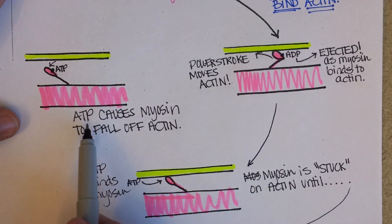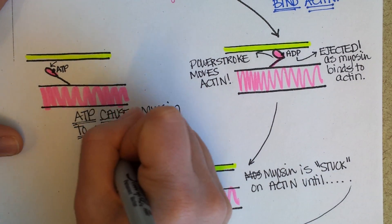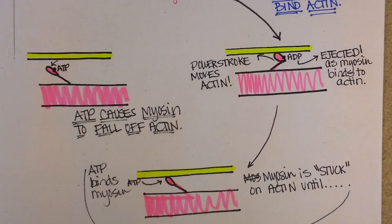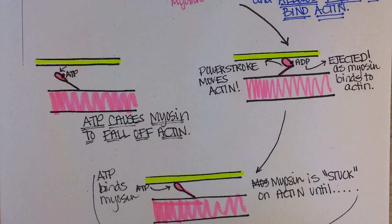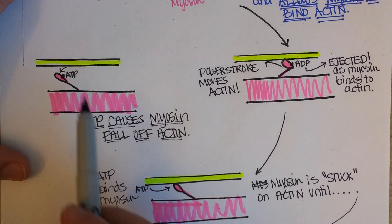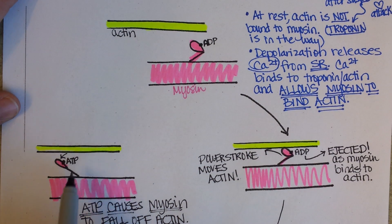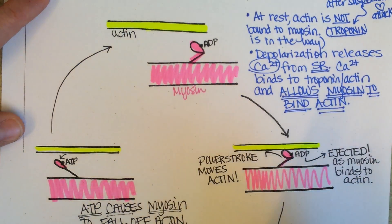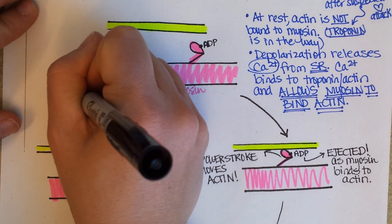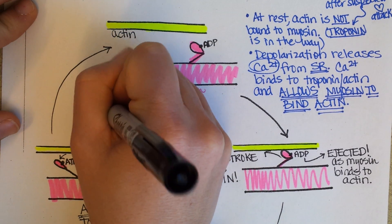Key ideas: calcium allows myosin to bind actin, and ATP is the molecule that causes myosin to fall off actin. That's important because this whole process happens thousands of times in a typical muscle contraction — you need a way to fall off and then re-cock the myosin head. What causes the re-cocking is the hydrolysis of ATP to ADP.